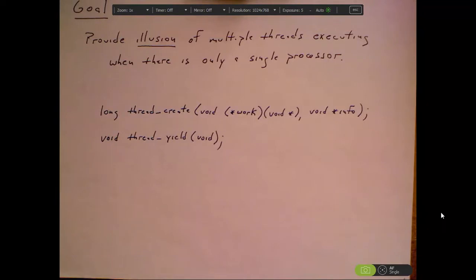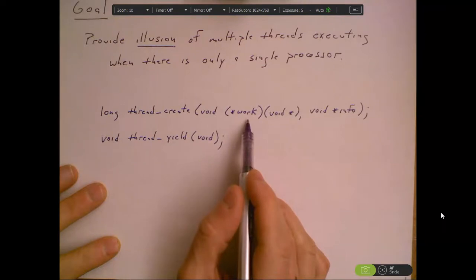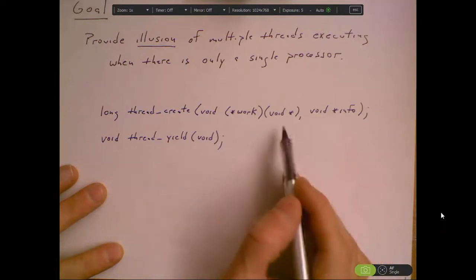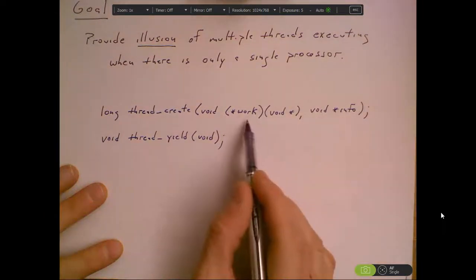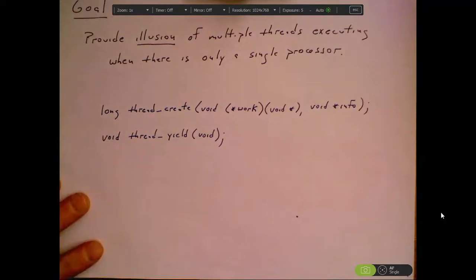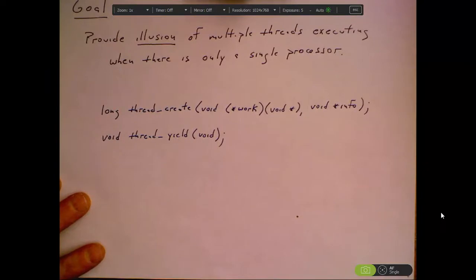We're going to have a very simple interface here, roughly based upon the POSIX thread interface. There's a thread_create function that takes a pointer to a work function and a pointer to a data item that's to be the single parameter passed to the work function. Thread_create should return a long, which is some kind of thread ID, so that we can have other primitives to manipulate that thread. I'm also going to look at implementing thread_yield, a function where one thread can give up the processor and let another thread run.